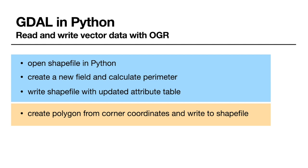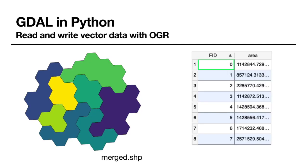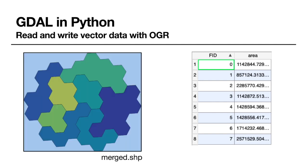Just a short reminder of what the data looks like. We have a shapefile called 'merge' which looks like a fancy puzzle, and its attribute table has a feature ID and a computed area field. We will create a new field storing the perimeter of each polygon, and then create a polygon of the extent of this input dataset and write that to a new shapefile.